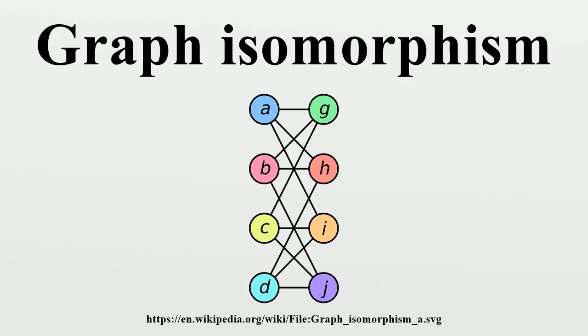This kind of bijection is commonly described as edge-preserving bijection, in accordance with the general notion of isomorphism being a structure-preserving bijection. If an isomorphism exists between two graphs, then the graphs are called isomorphic.